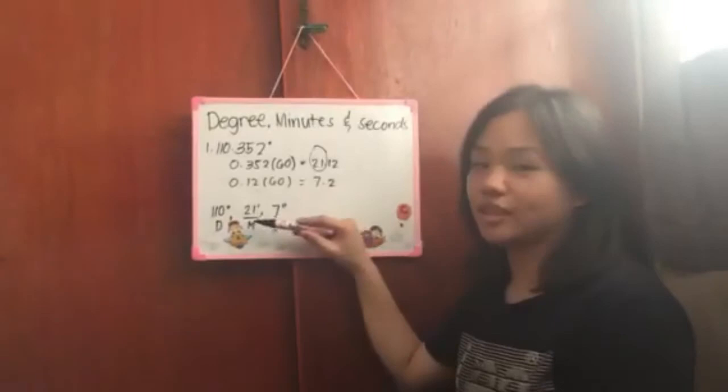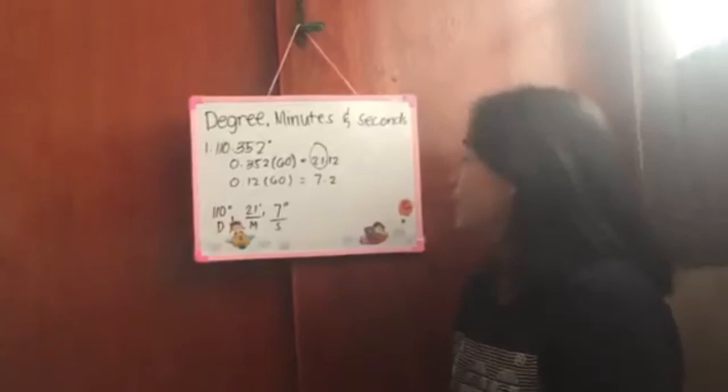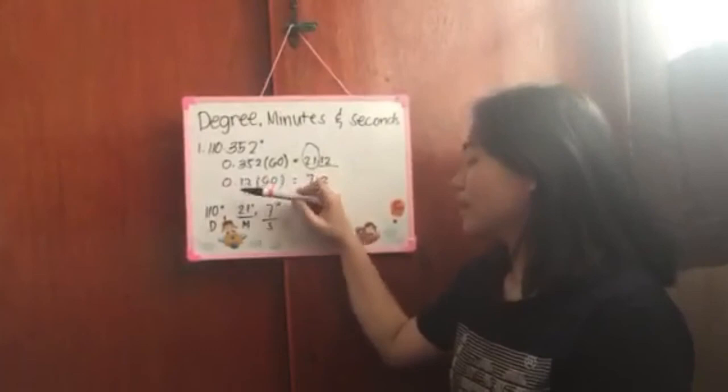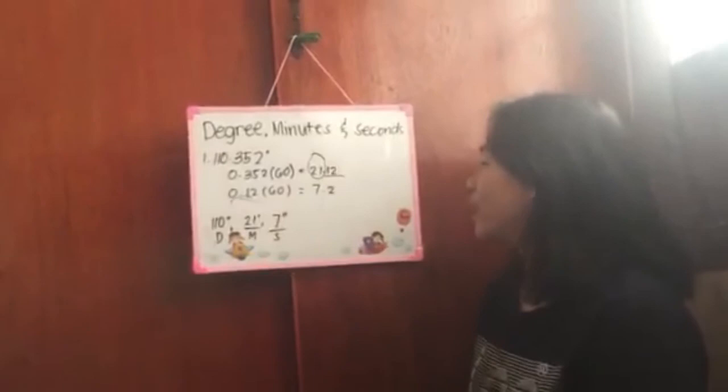Then to get the seconds, whatever remains here, what's to the right of the decimal point, multiply that. So this is what the result will be: 0.12 times 60. The result is 7.2. The 7, that's what you take. So this is how you write it, always with two apostrophes for seconds.